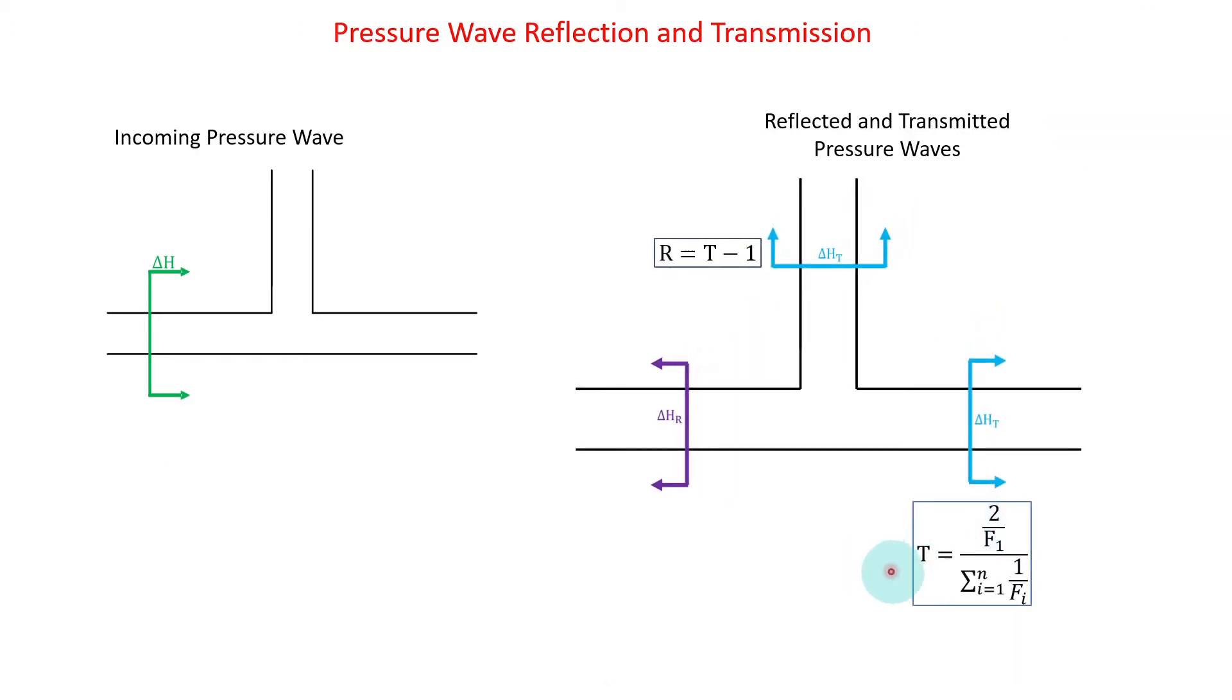So we went through the derivation. We found that the transmission factor is given by this equation where the transmission factor is equal to two over the elastic factor in pipe one.